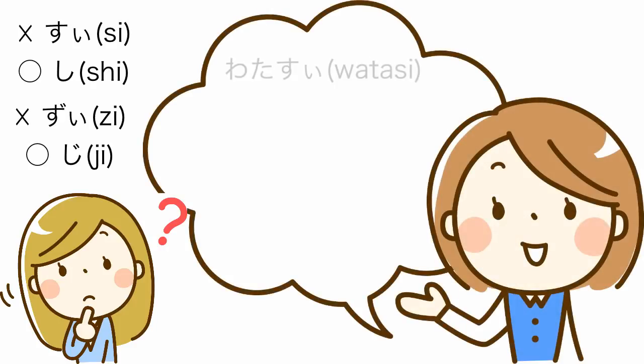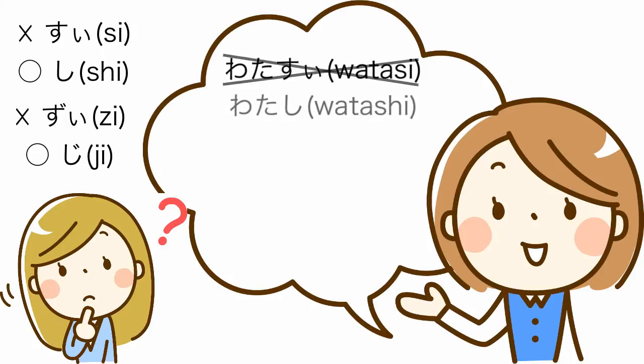For example, すいあわせ sounds odd as it's supposed to be しあわせ, and かずいこ as opposed to かじこ.